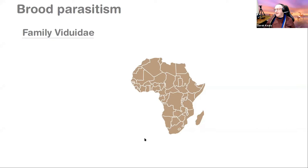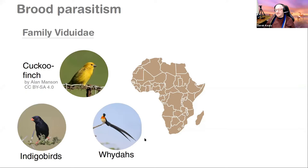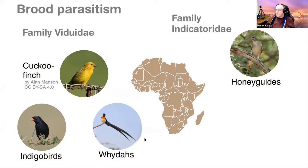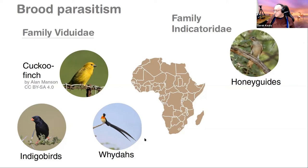Brood parasitism occurs in insects, fish, and birds. It's evolved multiple times in birds — in cuckoos across three groups, but also in Africa in the Viduidae: the cuckoo finch, indigobirds and whydahs, all brood parasites. And then there are the honeyguides, which hopefully we'll have a presentation on early next year.